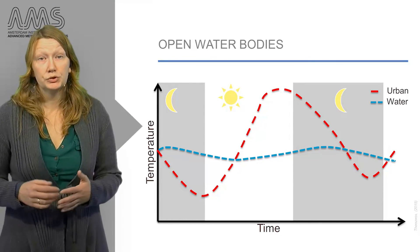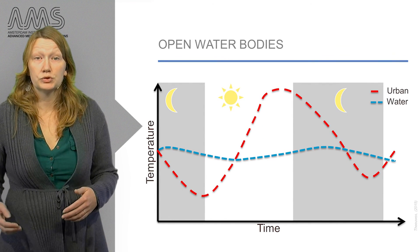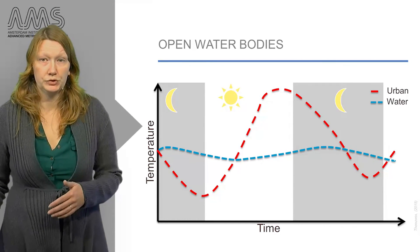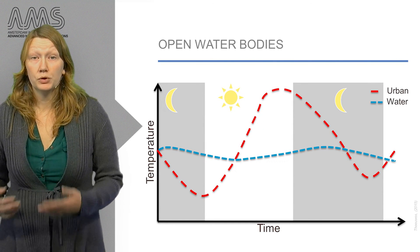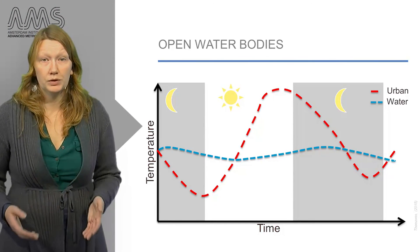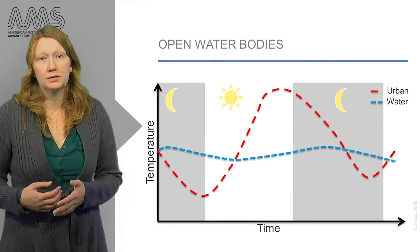Adding open water in a city reduces daytime temperatures when the air temperature reaches values higher than the water temperature. But during the night, when the air temperature drops below the water temperature, the water has a warming effect and open water enhances the urban heat island.